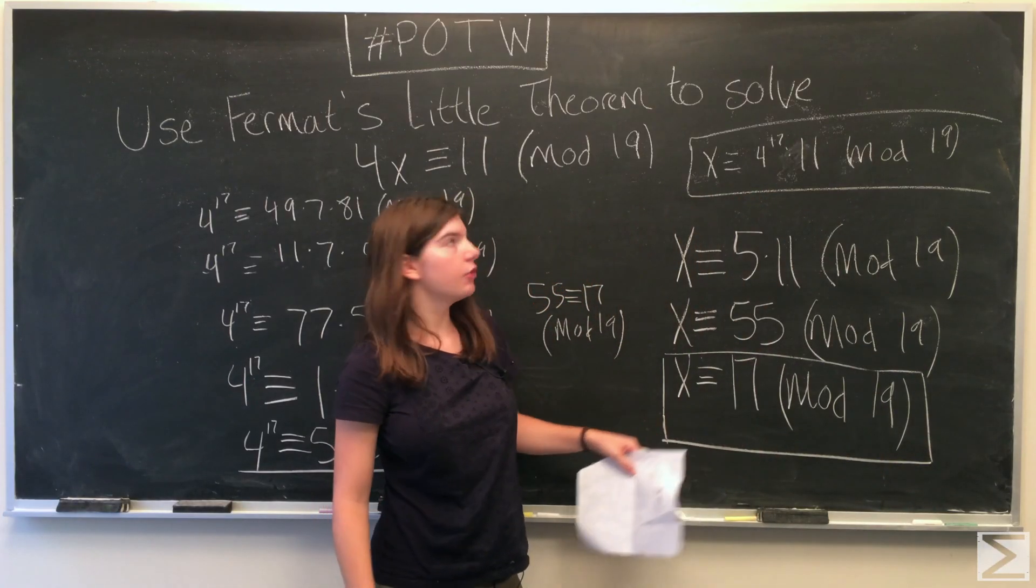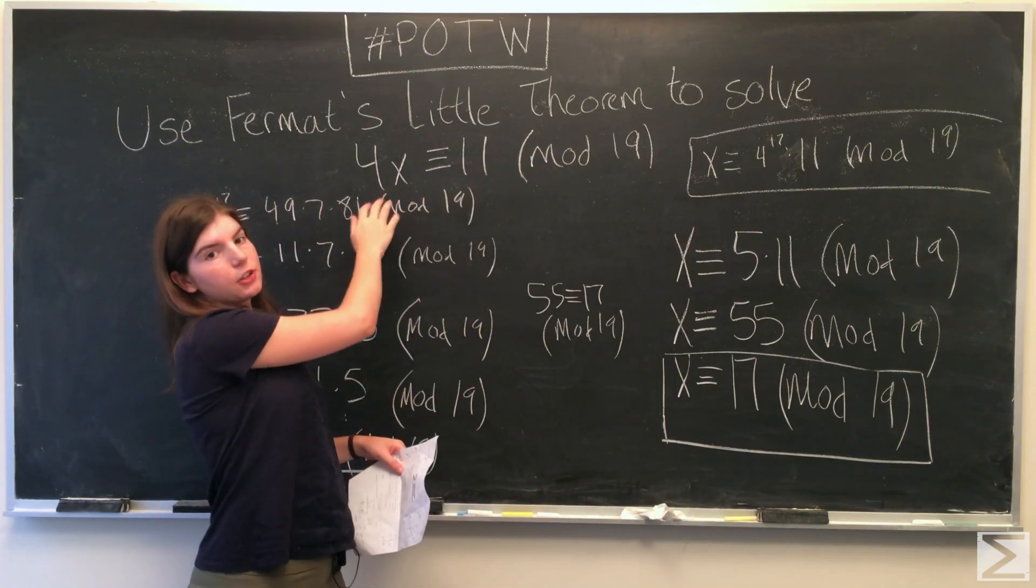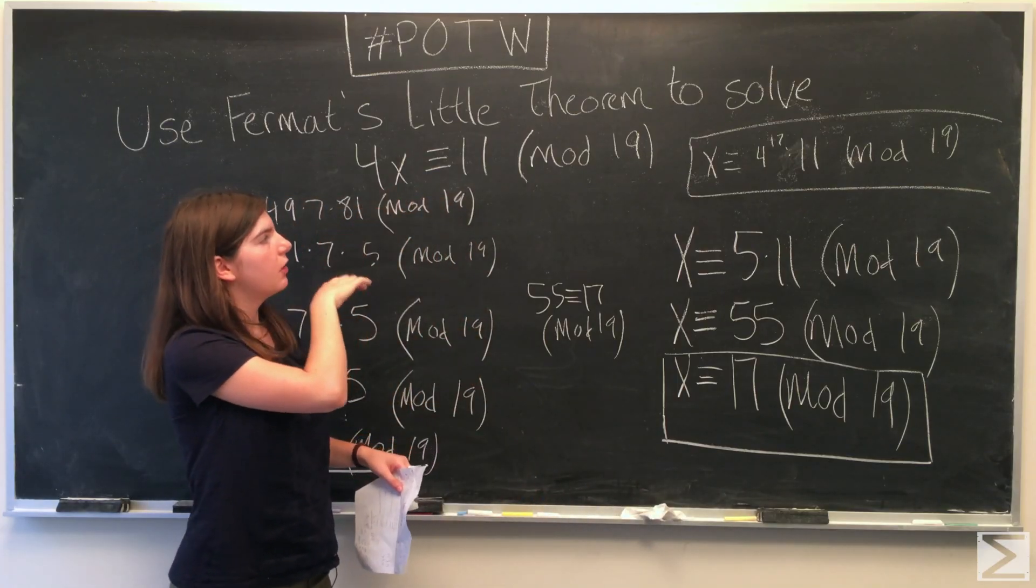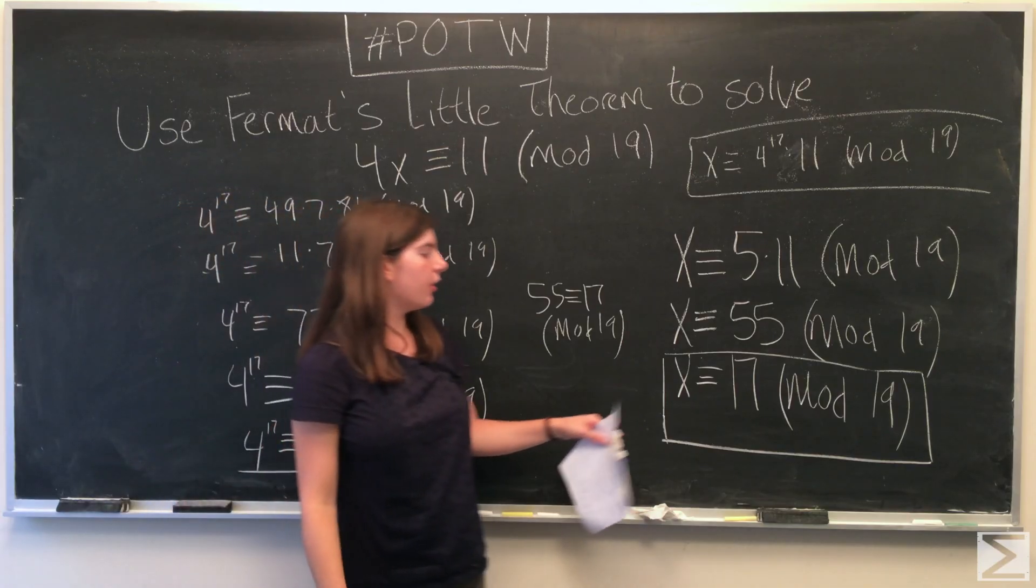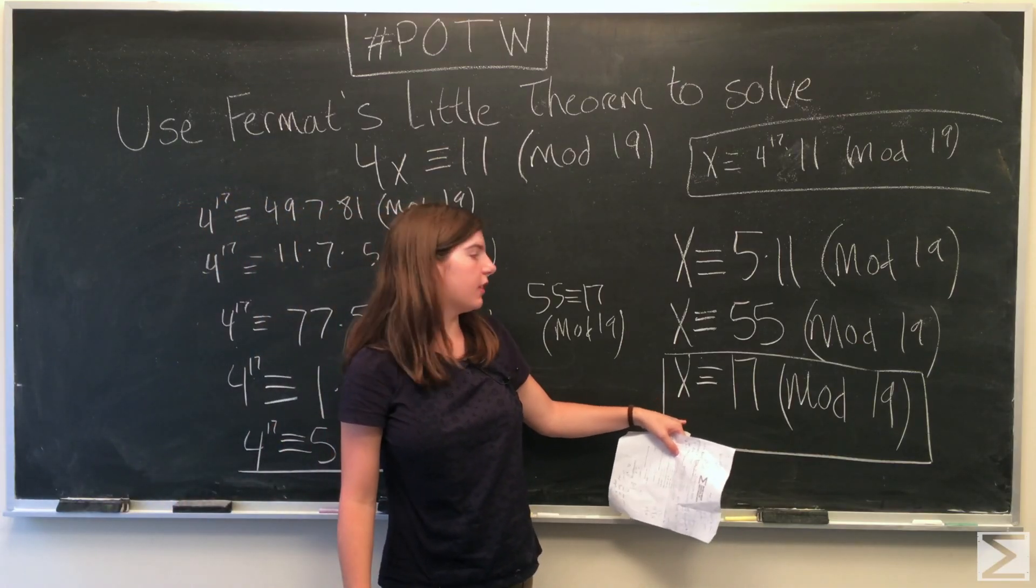So our solution to our linear congruence 4x is congruent to 11 modulo 19 is all the integers in the set that are congruent to 17.